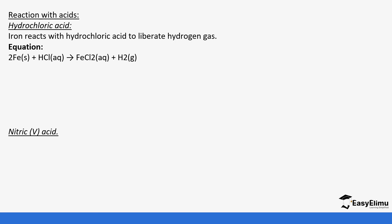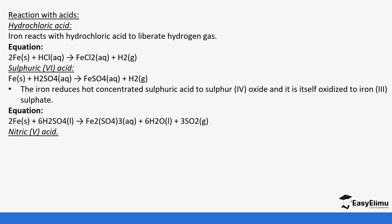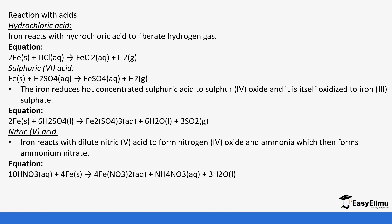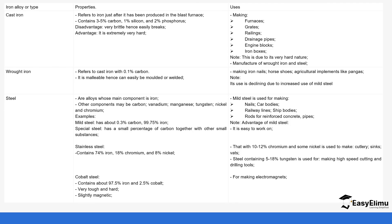In reactions with acids: iron reacts with hydrochloric acid to produce hydrogen gas and iron(II) chloride; with dilute sulfuric acid to form iron(II) sulfate and hydrogen. With hot concentrated sulfuric acid, it forms sulfur dioxide, water, and iron(III) sulfate due to the oxidizing nature of concentrated sulfuric acid. With dilute nitric acid, iron forms nitrogen dioxide, and with warm acid gives iron(II) nitrate. Concentrated nitric acid passivates iron due to the formation of an iron oxide protective layer on the metal surface.